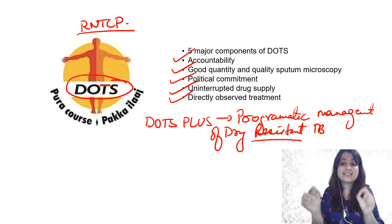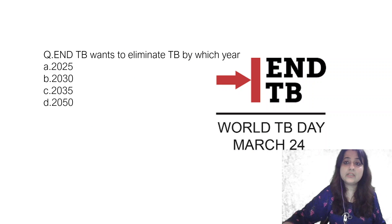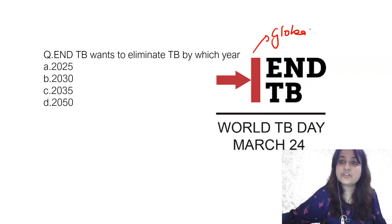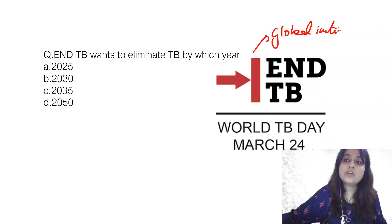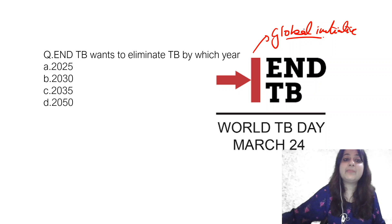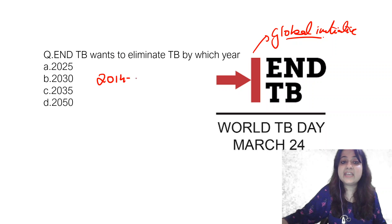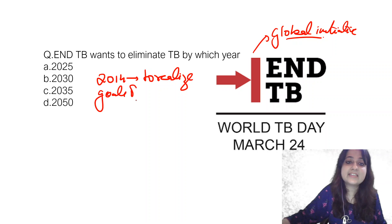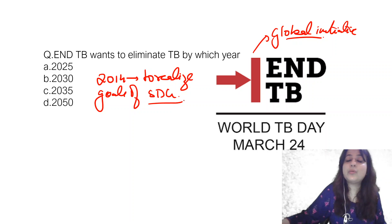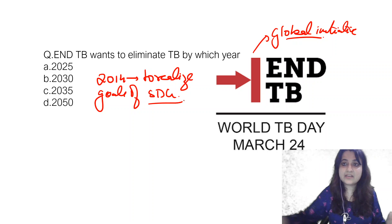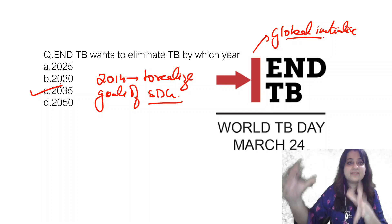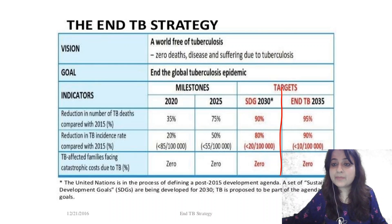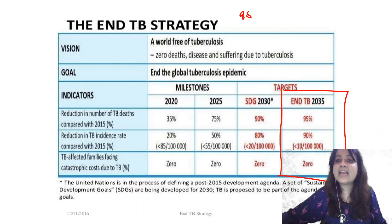The End TB initiative was launched in 2014 to realize the goals of SDG. According to SDG, we want to eliminate TB by 2030. According to End TB, we have given ourselves 5 years ahead — by 2035. The targets for End TB are 95, 90, and 0.